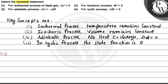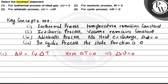First option: for isothermal process of an ideal gas, delta U is zero. We know that delta U for an ideal gas is equals to Cv times delta T. Since it's an isothermal process, delta T is equals to zero, therefore delta U is zero. So first option is correct — this is not the wrong option.